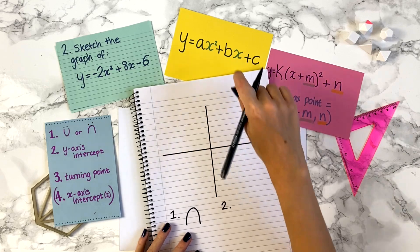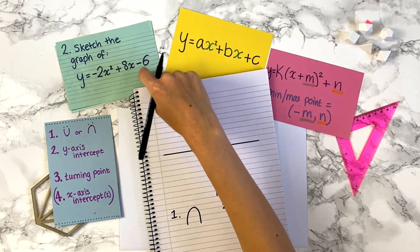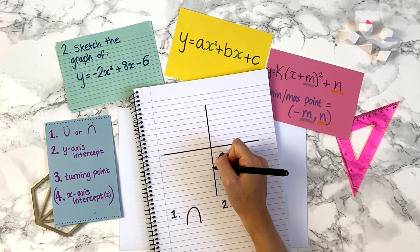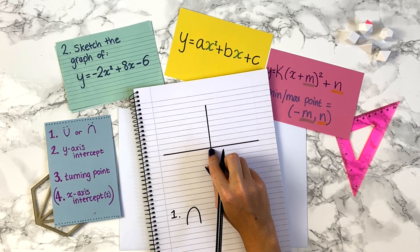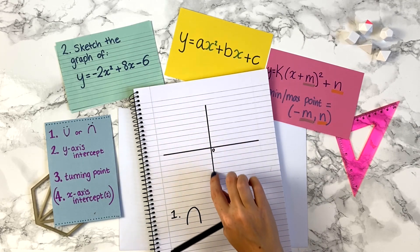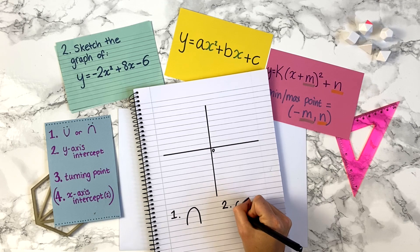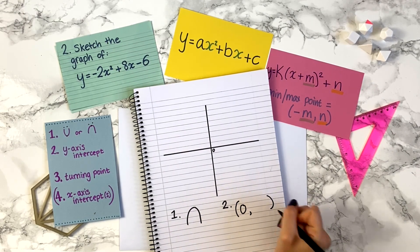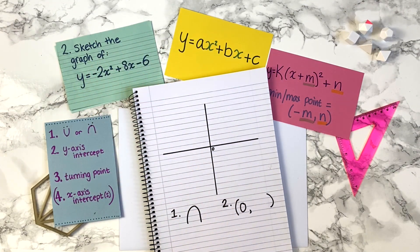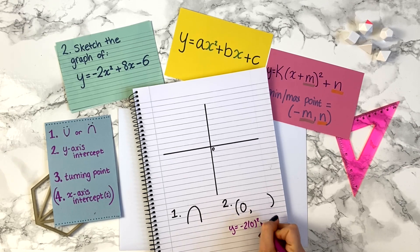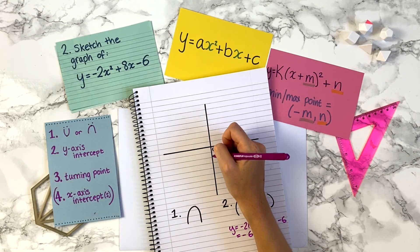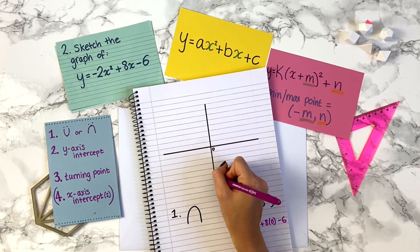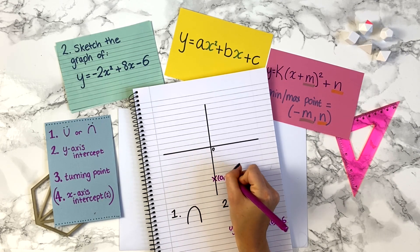Step two is the y-axis intercept. In this standard form, the constant term is minus 6, so it crosses the y-axis at (0, −6). To verify: at x equals zero, y equals minus 2 times 0 squared plus 8 times 0 minus 6, which gives y equals minus 6. So we mark the point (0, −6) on the graph.